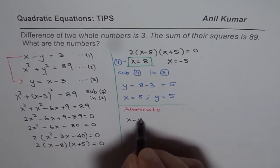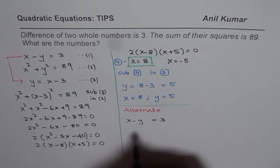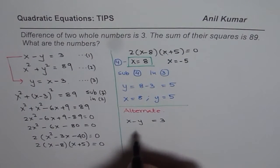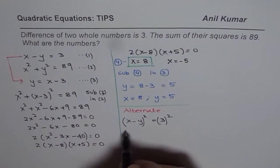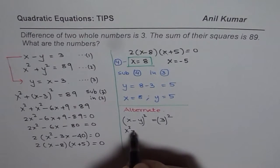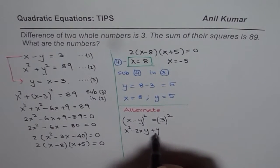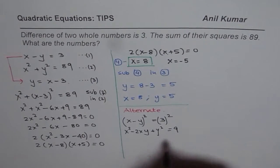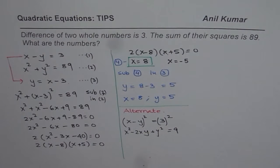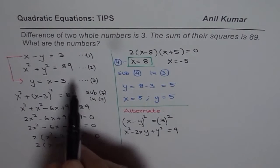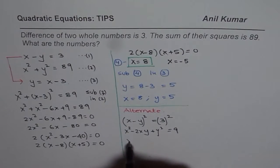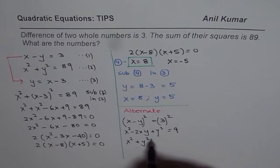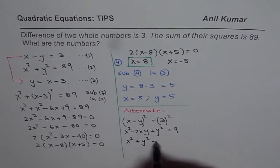Now we will begin with x minus y equals 3. So we have x minus y equals 3. If I square both sides, then what do I get? If I square both sides, I will get x square minus 2xy plus y square equals 9. Now I know what is x square plus y square. It is 89.